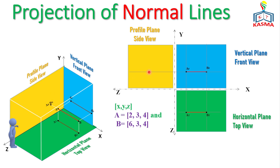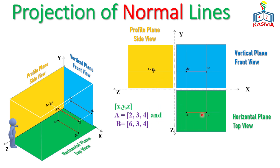For the profile plane, we use the Z component: Z = 4 cm, so measure 4 cm and construct a line. Since there is no additional separation between the two points, they align to each other — making just a point. The projections of point B and point A on the right side view both coincide at that point. So the projection of the line becomes a point on the side view, confirming it is a normal line.